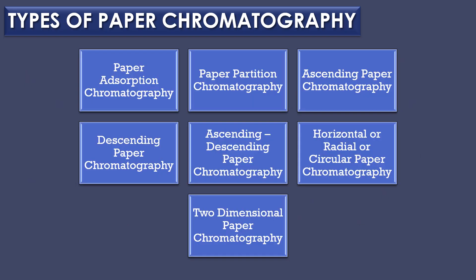There are seven types of paper chromatography: paper absorption chromatography, paper partition chromatography, ascending paper chromatography, descending paper chromatography, ascending-descending paper chromatography, horizontal or radial or circular paper chromatography, and finally two-dimensional paper chromatography.